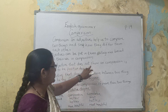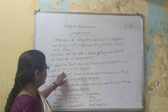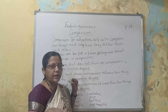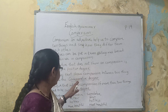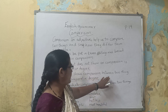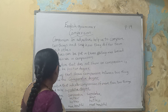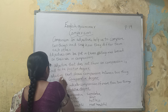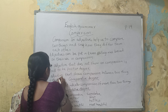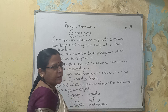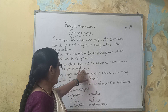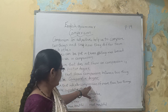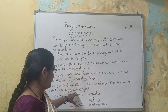An adjective that does not show any comparison is said to be Positive. Maine aapko bata diya hai ki positive matlab tick — matlab usta, normal. An adjective that shows comparison between two things is said to be Comparative — matlab isse jayada, slightly more.